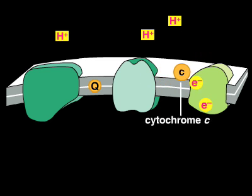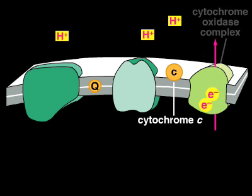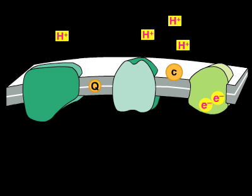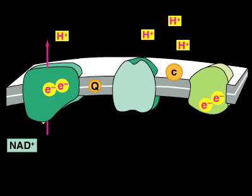Finally, cytochrome C delivers the electrons to the cytochrome oxidase complex, a third proton pump. The cycle repeats until the cytochrome oxidase complex has accumulated four electrons.